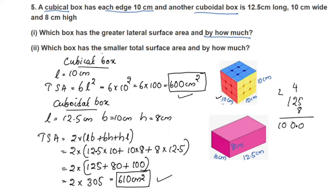Now, which box has the smaller total surface area? 600 is less than 610 cm², so the cubical box has the smaller total surface area. The difference is 610 minus 600 = 10 cm².